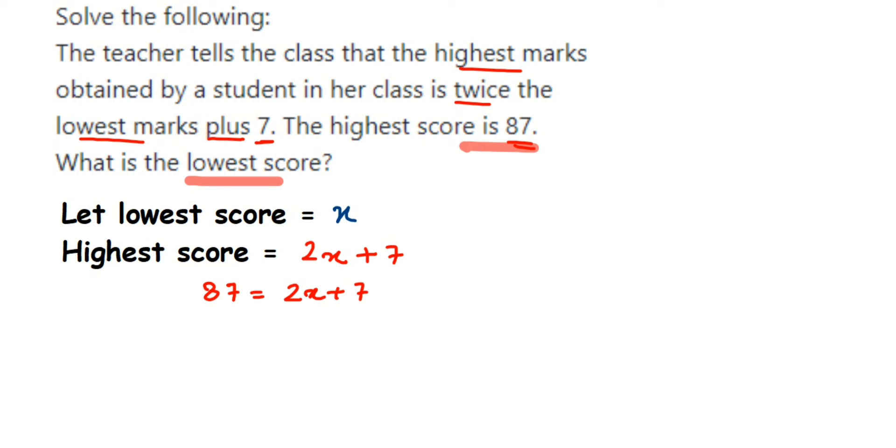I have to find out the value of x from this equation. We have got a linear equation here. First I'm going to transpose 7 to the other side. 7 is in addition; when it goes to the other side it becomes subtraction. So 87 minus 7 equals 2x, which becomes 80 equals 2x.